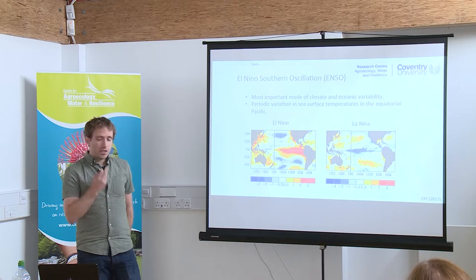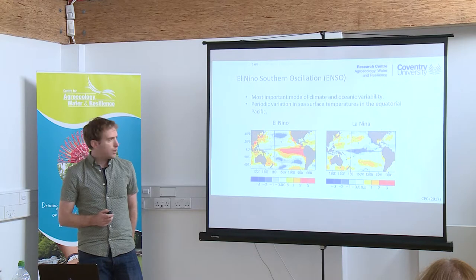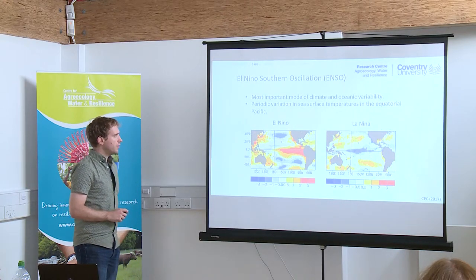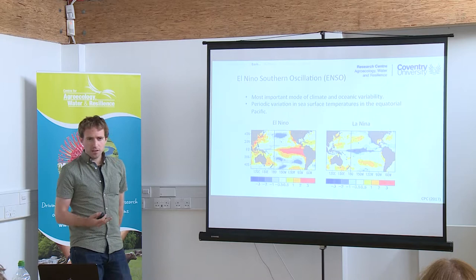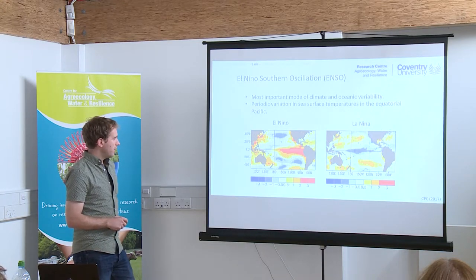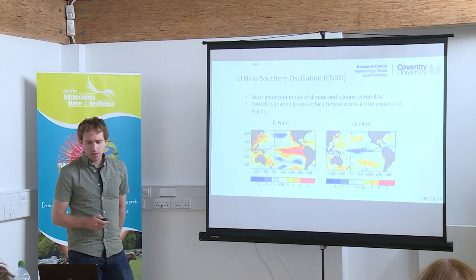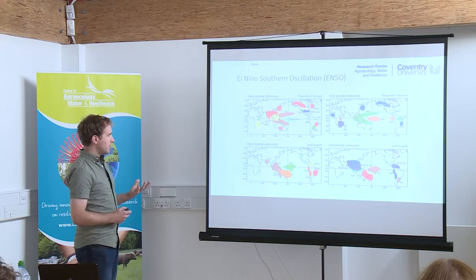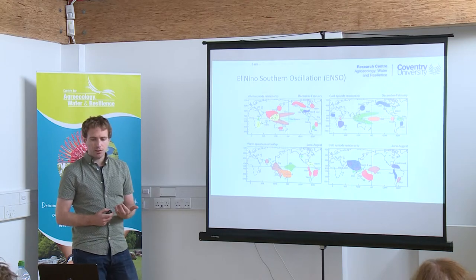The most important of these is the El Niño Southern Oscillation — the periodic variation in wind and sea surface temperatures in the central and eastern equatorial Pacific. A positive phase of ENSO, known as El Niño, is characterised by warmer than average waters in the central and eastern Pacific. The negative phase, La Niña, is more or less the opposite. Each of these phases is associated with a number of fairly well-understood teleconnections in different parts of the world.